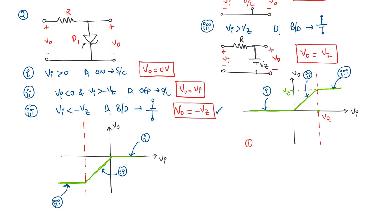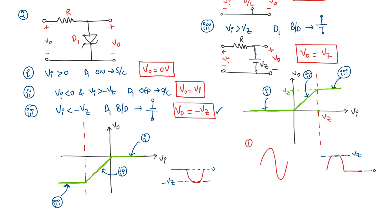For the first circuit, if you give a sinusoidal input waveform, the output gives only the positive half of the wave, clipped at a reference of Vz. So the output is between 0 and Vz, providing two references by default due to the breakdown characteristic. For the second circuit, with the same input, the output gives the negative half of the wave clipped to minus Vz, so the waveform is between 0 and minus Vz.